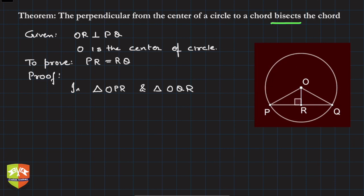In triangle OPR and OQR, what is very obvious is OP is equal to OQ. Both are radii of the same circle. Radii of the same circle are always equal. That's the virtue of the circle.